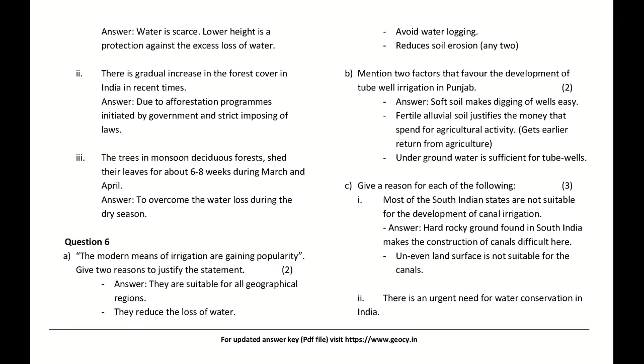Mention two factors that favor the development of tube well irrigation in Punjab. Answer: Soft soil makes digging of wells easy; fertile alluvial soil justifies the money spent on agricultural activity; earlier returns from agriculture; and underground water is sufficient for tube wells.